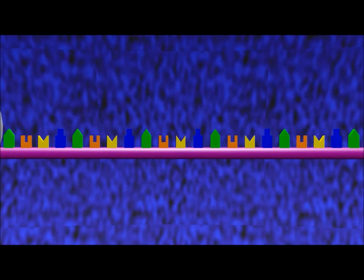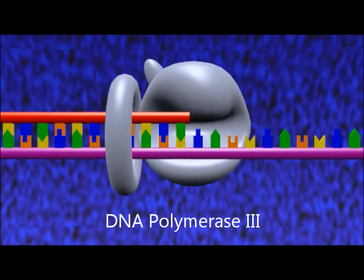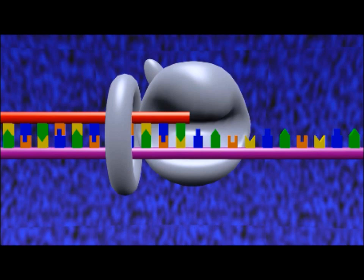In E. coli, DNA polymerase 3 catalyzes the incorporation of new complementary bases to the new DNA strand. This is only the alpha and beta units of the DNA polymerase 3 enzyme.